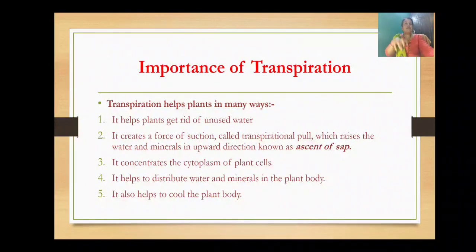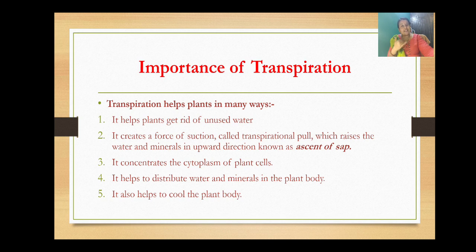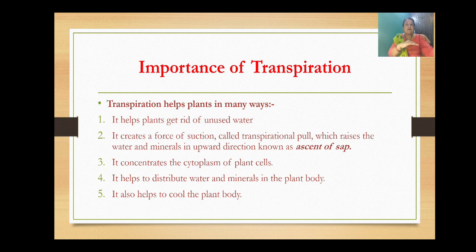Transpiration also concentrates the volume of the cytoplasm inside the plant cells. It helps to distribute the water and minerals throughout the plant body. It also helps to cool the plant body — a kind of cooling effect is created because of transpiration, since water is lost it provides a cooling effect over the plant's surface.